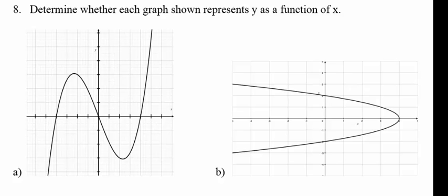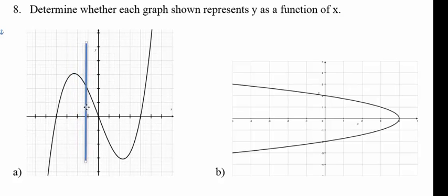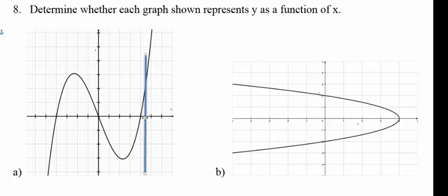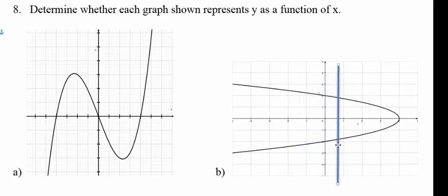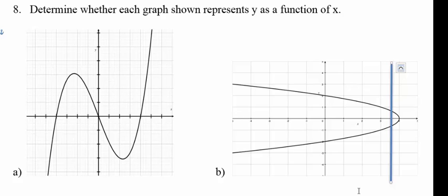Here we're asked to determine if each graph represents y as a function of x. We apply the vertical line test: if a vertical line passes through only one point on the curve, the graph represents y as a function of x. For the first curve, the line crosses at only one point. For the second curve, the line immediately passes through two points. So graph A represents y as a function of x, and graph B does not.